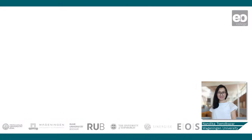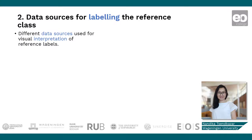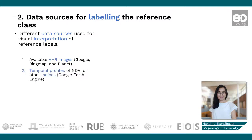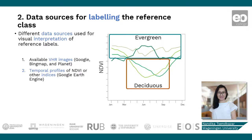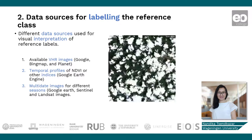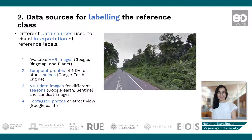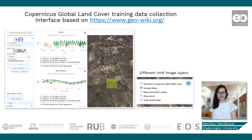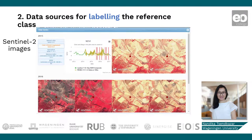Many different types of remote sensing data can be used as a source for labeling or interpretation. These can be very high resolution images, for example on Google Maps, Bing Maps, OpenStreetMap, or PlanetScope. Temporal profiles of indices such as NDVI are also useful for seasonal dynamics — for example, to identify if a forest is evergreen or deciduous. Similarly, multi-date images such as Sentinel are useful to understand seasonal dynamics. Another useful source is geotagged photos or street views in Google Earth. Here you see an example of an image interpretation interface used for training data collection of the Copernicus Global Land Cover product, which makes use of all these data sources.